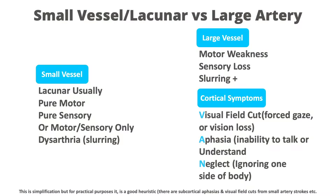How can you tell the difference? Both types are very similar. Both have motor weakness, sensory loss, and dysarthria — slurred speech. Now dysarthria is not aphasia. Aphasia is when you can't actually name objects like 'shirt' or 'pen.' Dysarthria is a motor speech issue, not aphasia. Both small vessel and large vessel strokes share motor, sensory, and dysarthria symptoms.